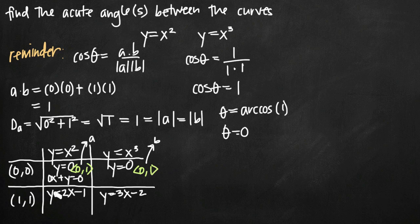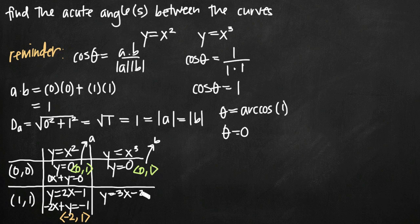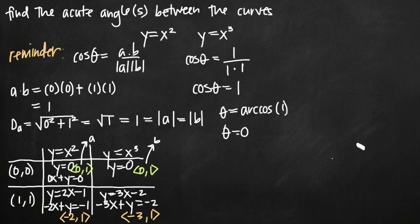Now let's apply the same process to the tangent lines at the point (1, 1). For y equals 2x minus 1, I subtract 2x from both sides to get negative 2x plus y equals negative 1. The coefficient on x is negative 2 and the coefficient on y is positive 1, giving vector (−2, 1). For y equals 3x minus 2, subtracting 3x gives negative 3x plus y equals negative 2. The coefficients give vector (−3, 1). These are our two vector representations.